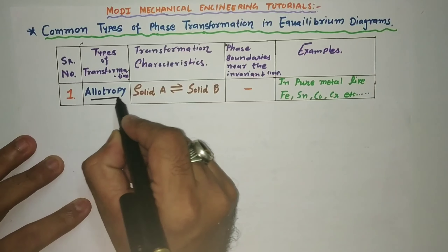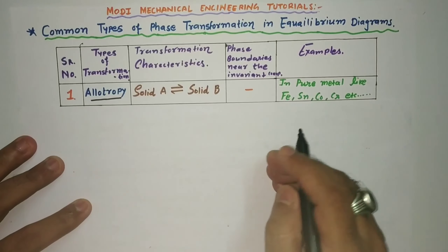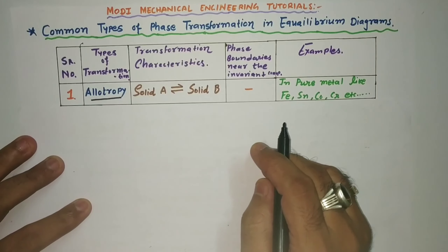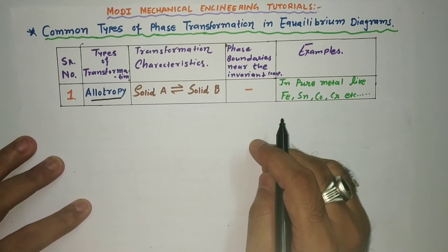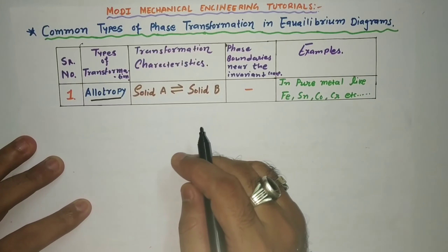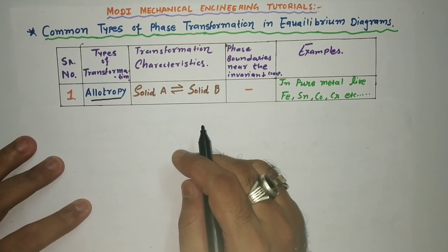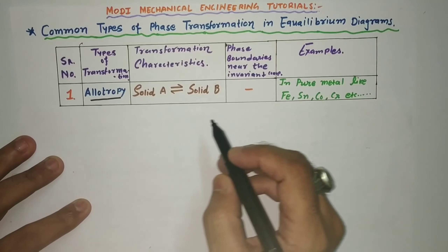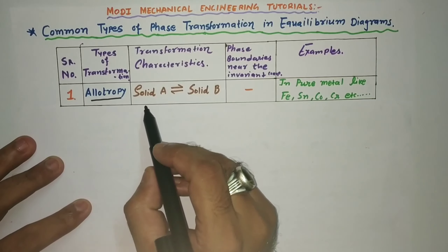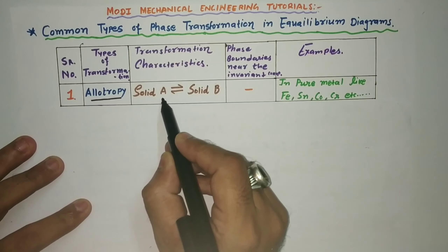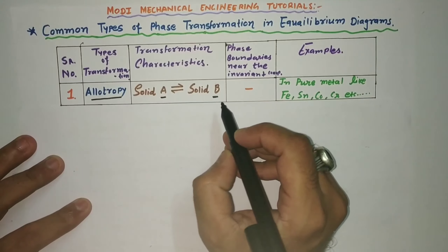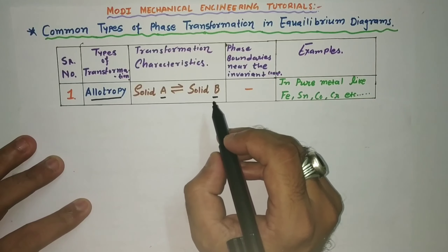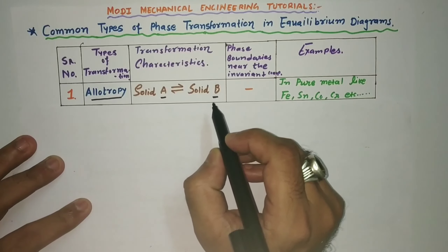The first type is allotropy. Allotropy means that at different temperatures, different kinds of microstructure are found — you can say it is the allotropy of metals. An example of this transformation is solid A converting into solid B, so allotropy refers to solid-to-solid transformations.